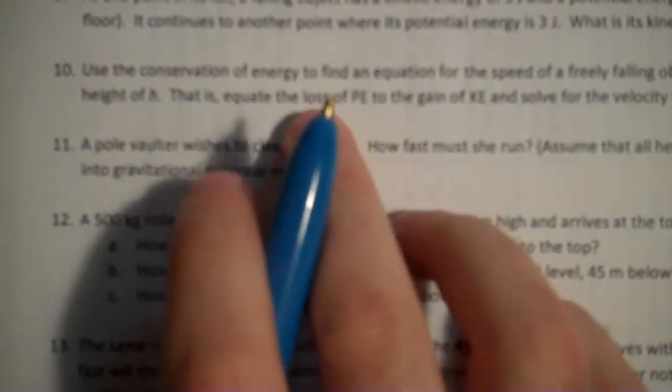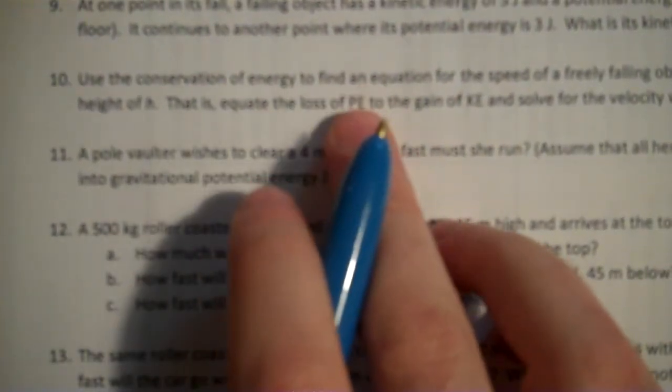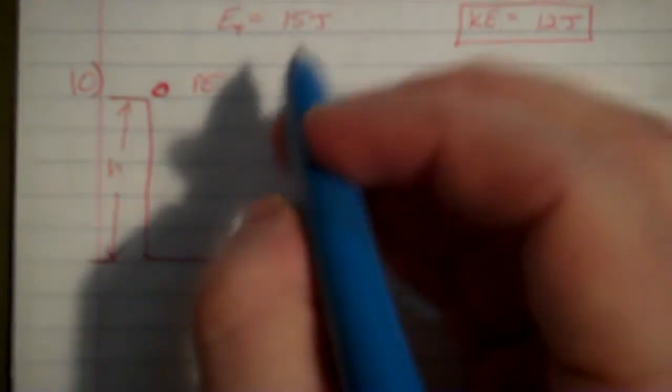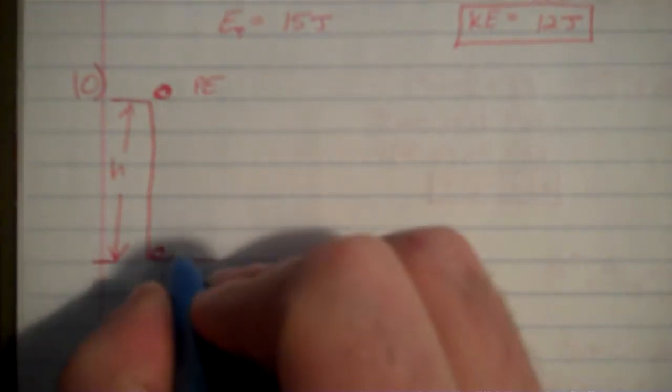That is, to restate that, equate the loss of potential energy to the gain of kinetic energy, and solve for the velocity. So it's all potential up here, which would mean once it's down here, right before it hits, it's all kinetic.